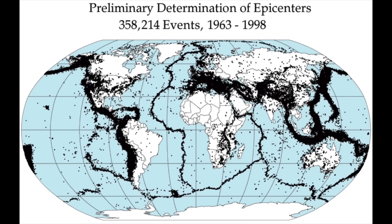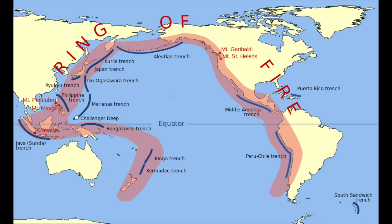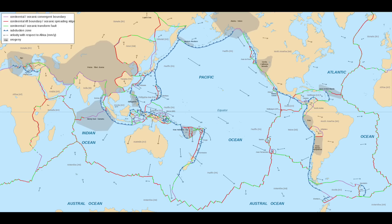Despite the snail-like pace, the forces generated result in devastating earthquakes. Regions at the edges of tectonic plates are more prone to earthquake activity. The Asia-Pacific region is known as the Ring of Fire. These plates have certain directions of movement.